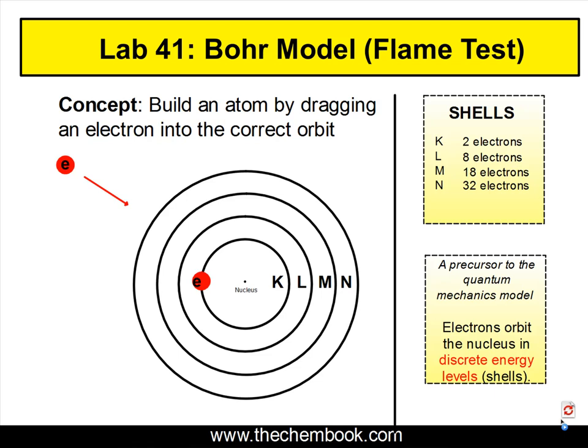Welcome to the Bohr model lesson. In lab, you were taking seven different metals and putting them into the flame. You were heating the metals up. As soon as the metals were heated, the electrons would go from a ground state to an excited state. And when they would come back down from an excited to a ground state, light would be given off and each metal had a characteristic color. So we want to look now at how the Bohr model is able to explain this type of behavior that you saw in the chemistry lab.